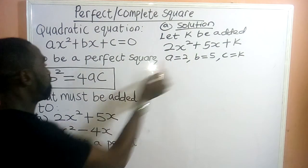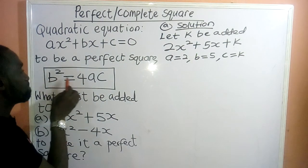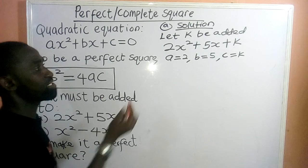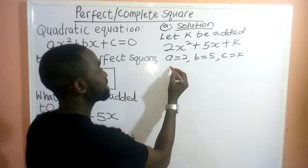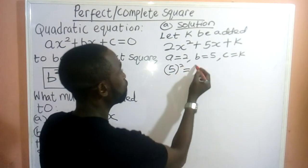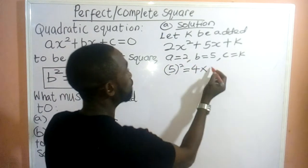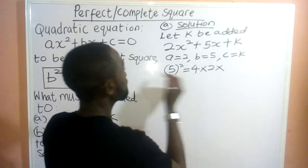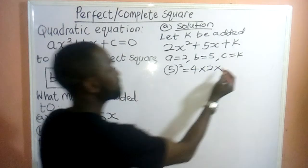Plus, what is the formula for perfect square? B² must be equal to 4ac. So, we have our b², that is 5², minus 4. Whatever our a is, our a is 2. Whatever our c is, is k.